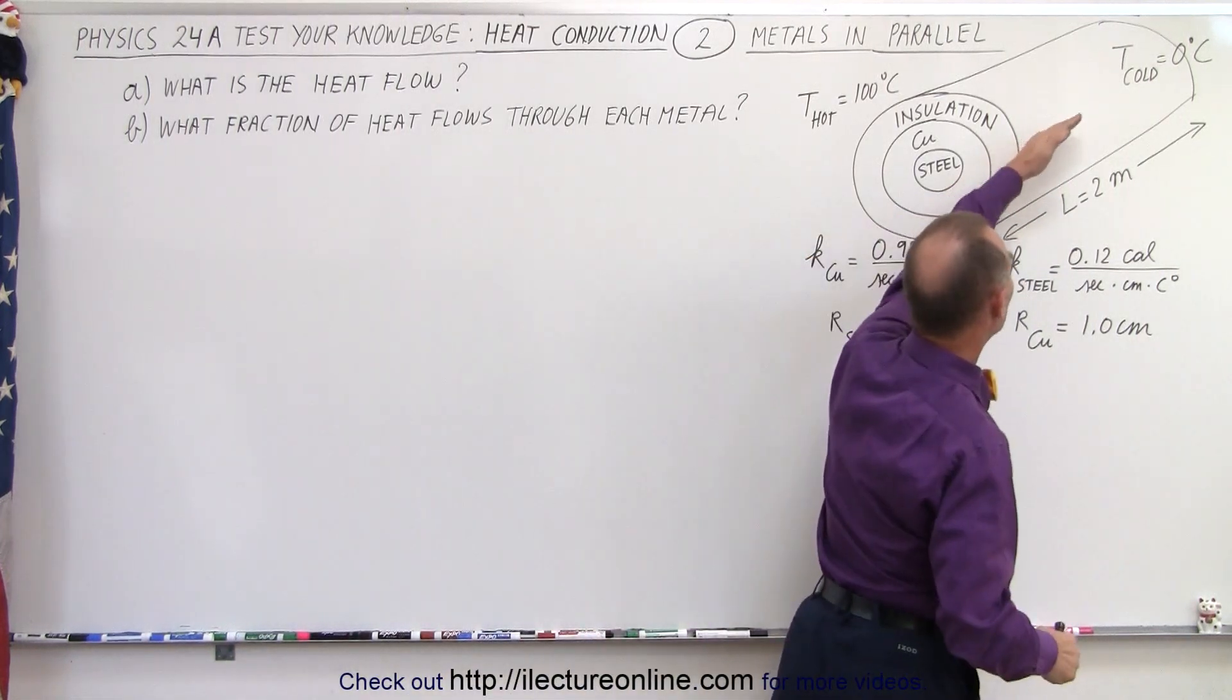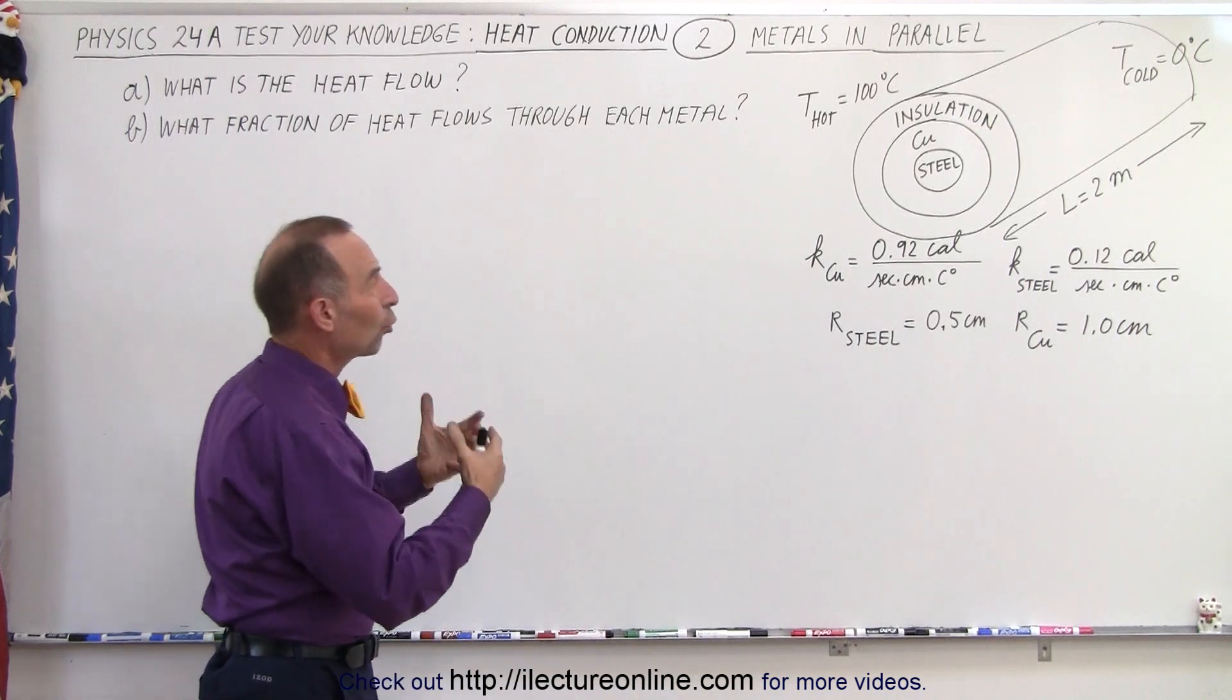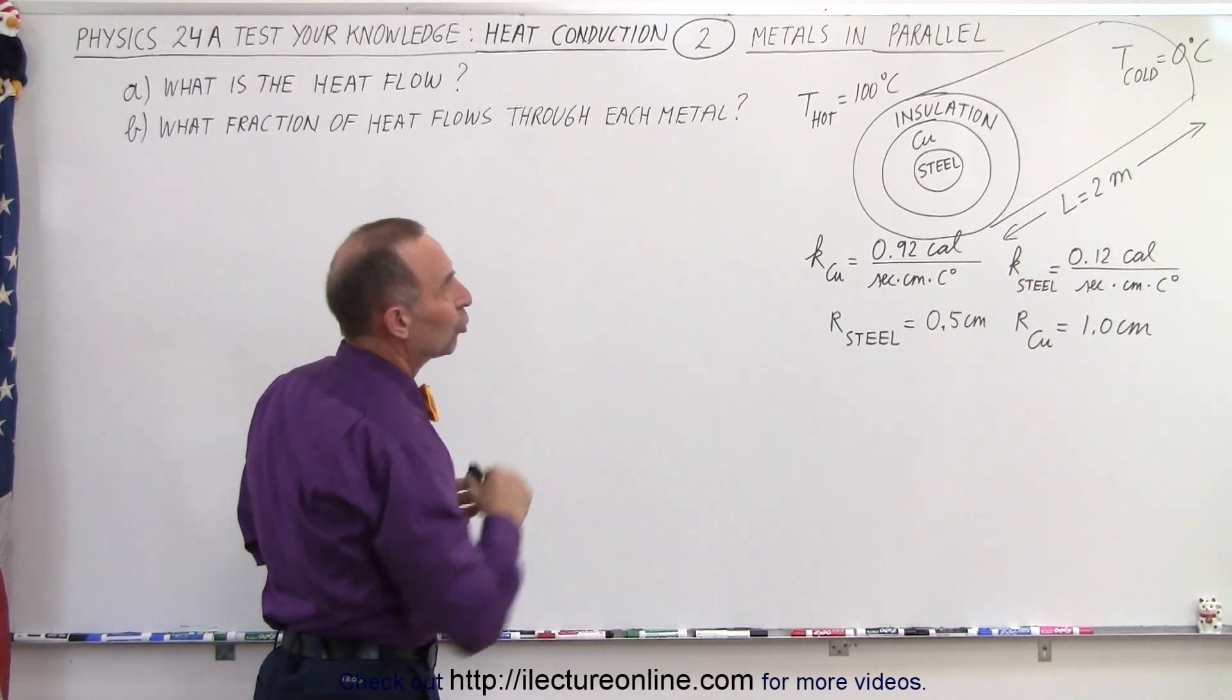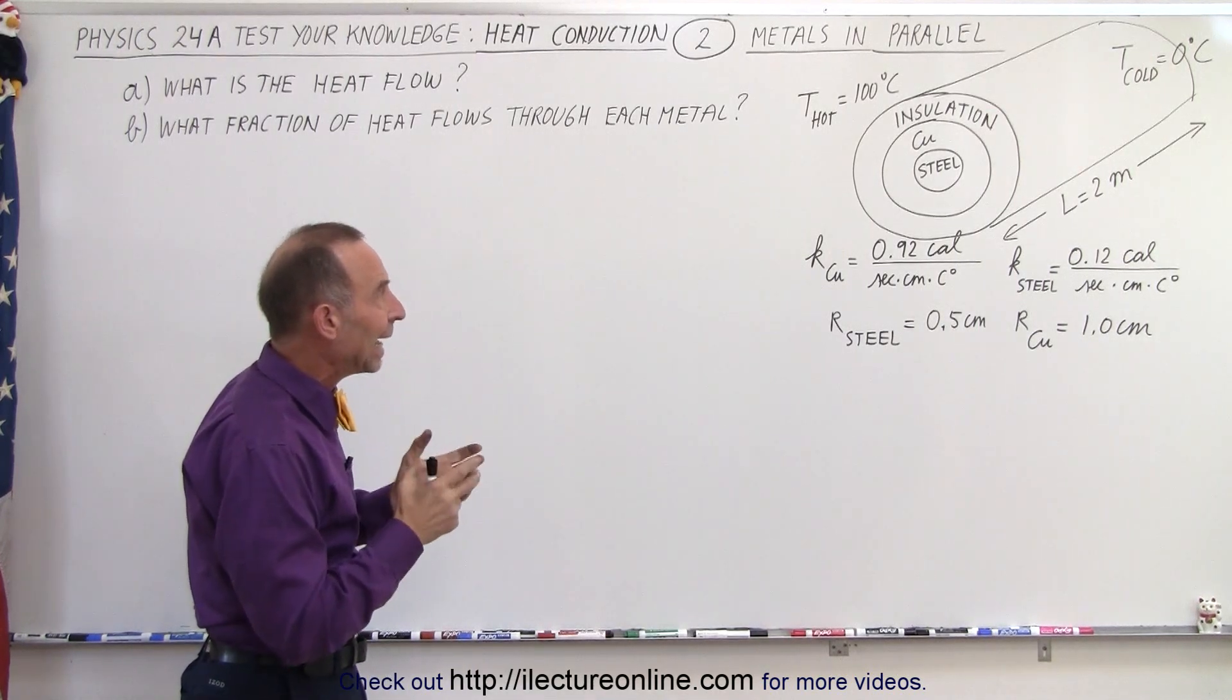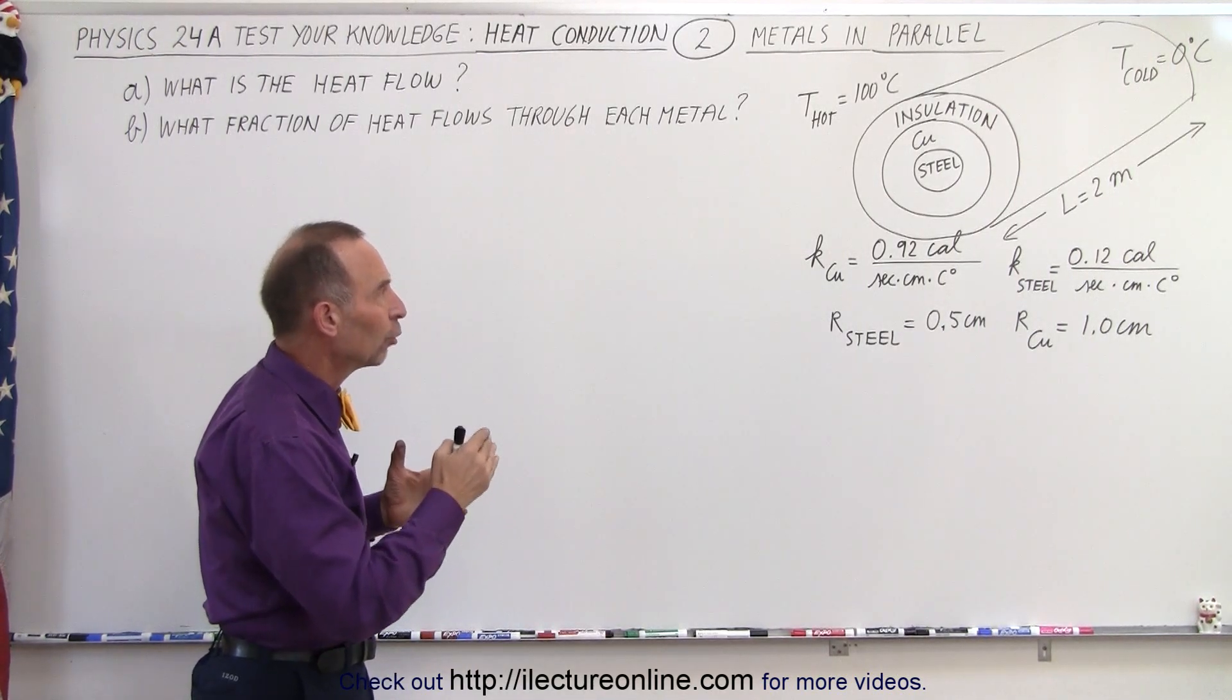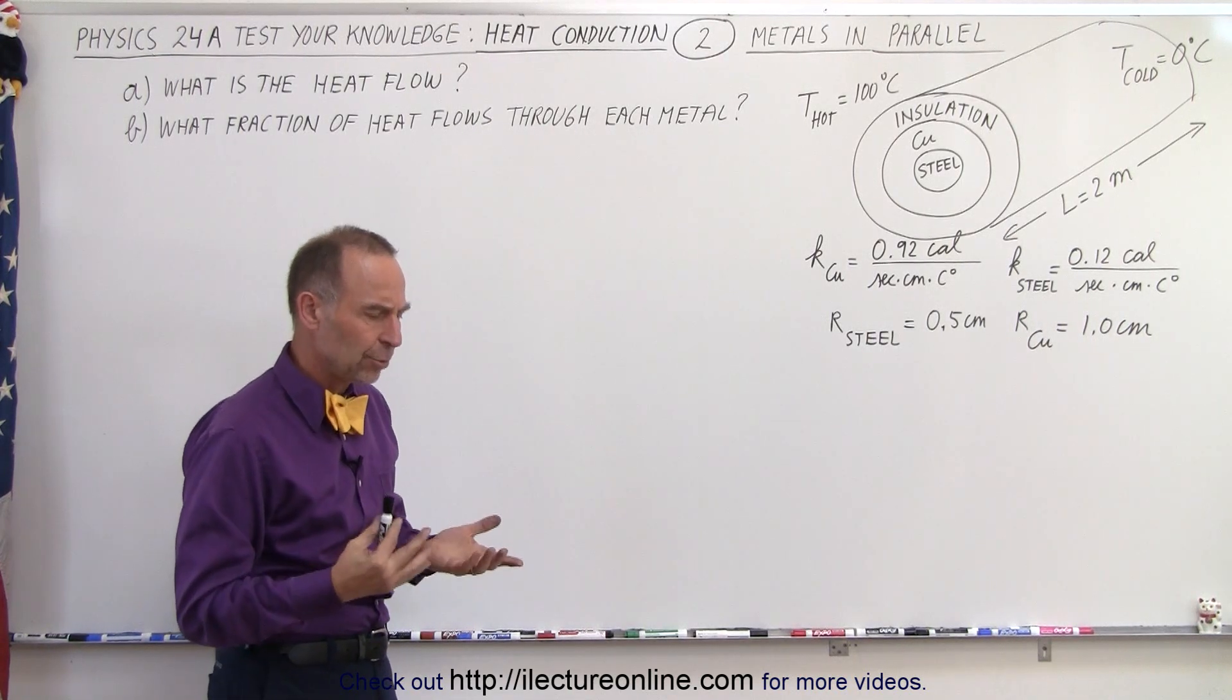So heat will be traveling in this direction. The questions, first of all, what is the total heat flow through that tube, of course assuming that no heat goes out through the insulation, and what is the fraction of that heat flow that goes to the copper and through the steel? How do we do that?